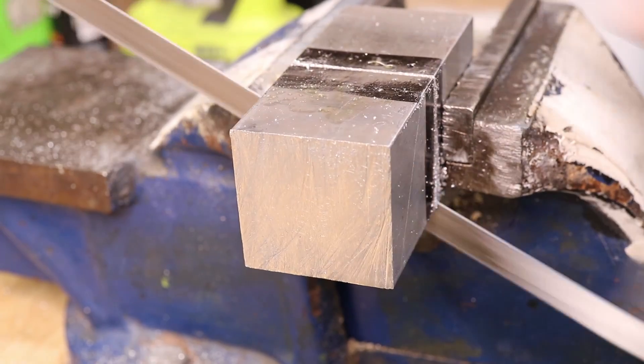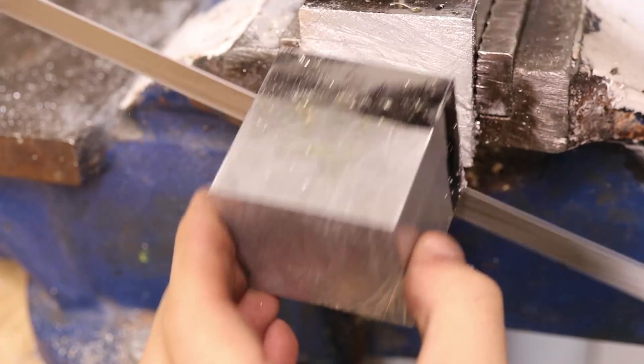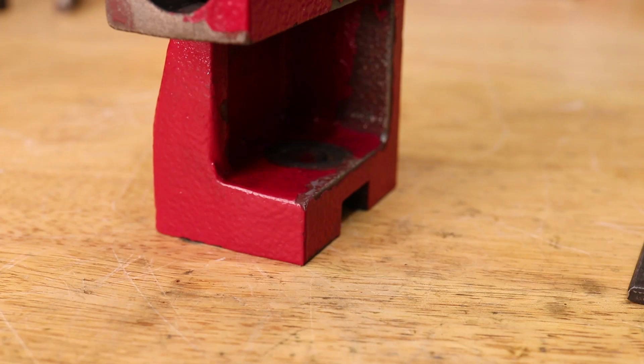My aim is to machine the aluminum so it can easily slot into the void. Before I can do that, I need to quickly modify the tailstock.